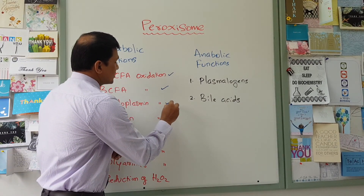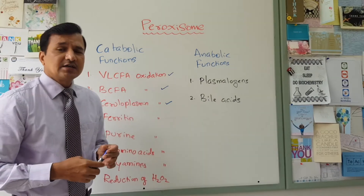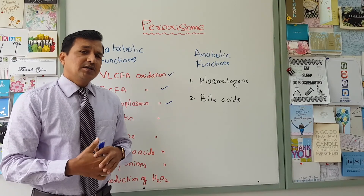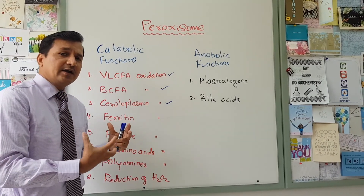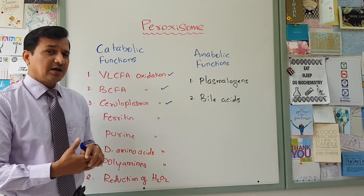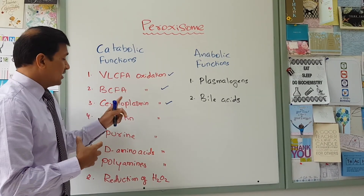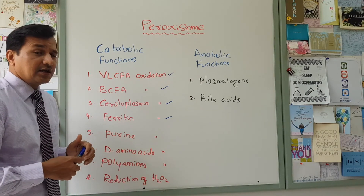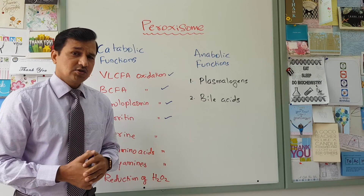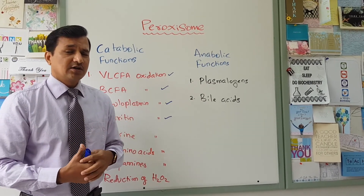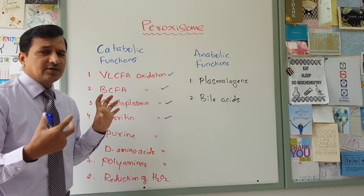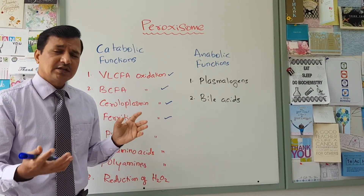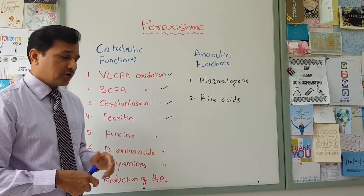Some ceruloplasmin in the cell is oxidized in the peroxisome. Ceruloplasmin is a copper-containing protein, so peroxisomes handle some ceruloplasmin and release copper. The fourth function of peroxisomes is ferritin oxidation. Ferritin is an iron-containing protein; oxidation of ferritin releases iron. Some ferritin is oxidized in peroxisomes, though most is oxidized in the lysosome.